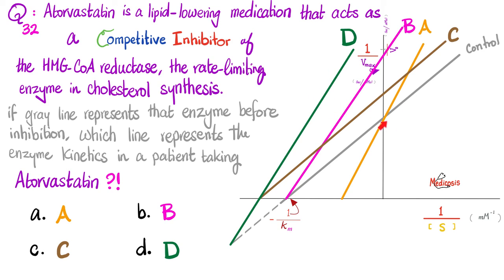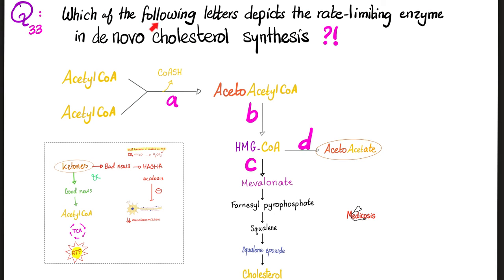If you want more review on this topic, please refer to video number 21 in this biochemistry playlist. Next: which of the following letters depicts the rate-limiting enzyme in de novo cholesterol synthesis? Is it A, B, C, or D? Let me know your answer in the comments — you'll find the answer key in the next video.